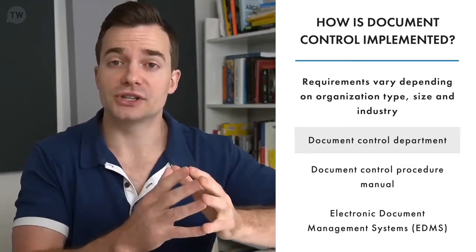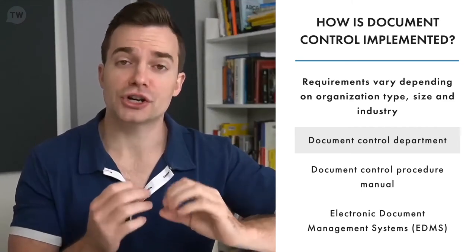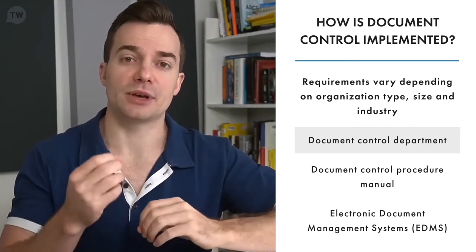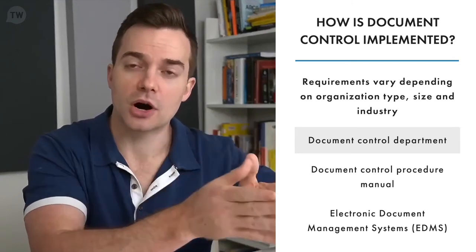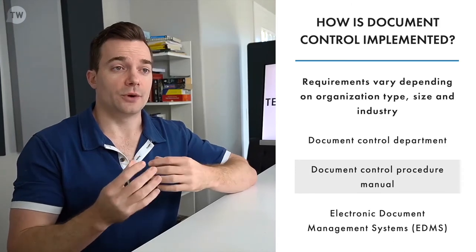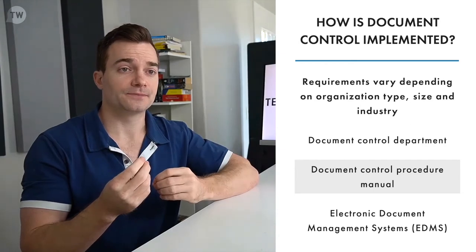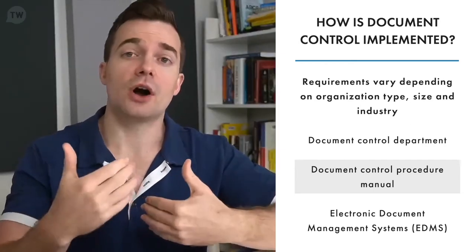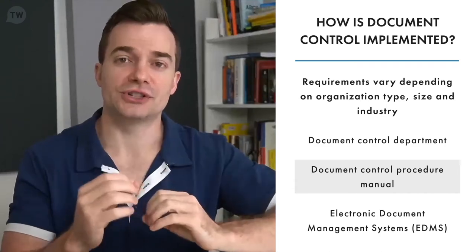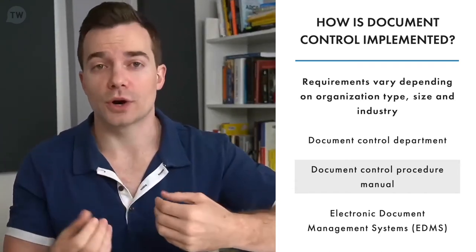Document control specialists and coordinators also work in this department. They usually work directly under the document control manager and are assigned to look after document control for specific departments and projects. The document control procedure manual contains approved document control procedures based on best practices, and is distributed throughout the organization so all employees know the exact procedures they must follow for any type of document they are working on.